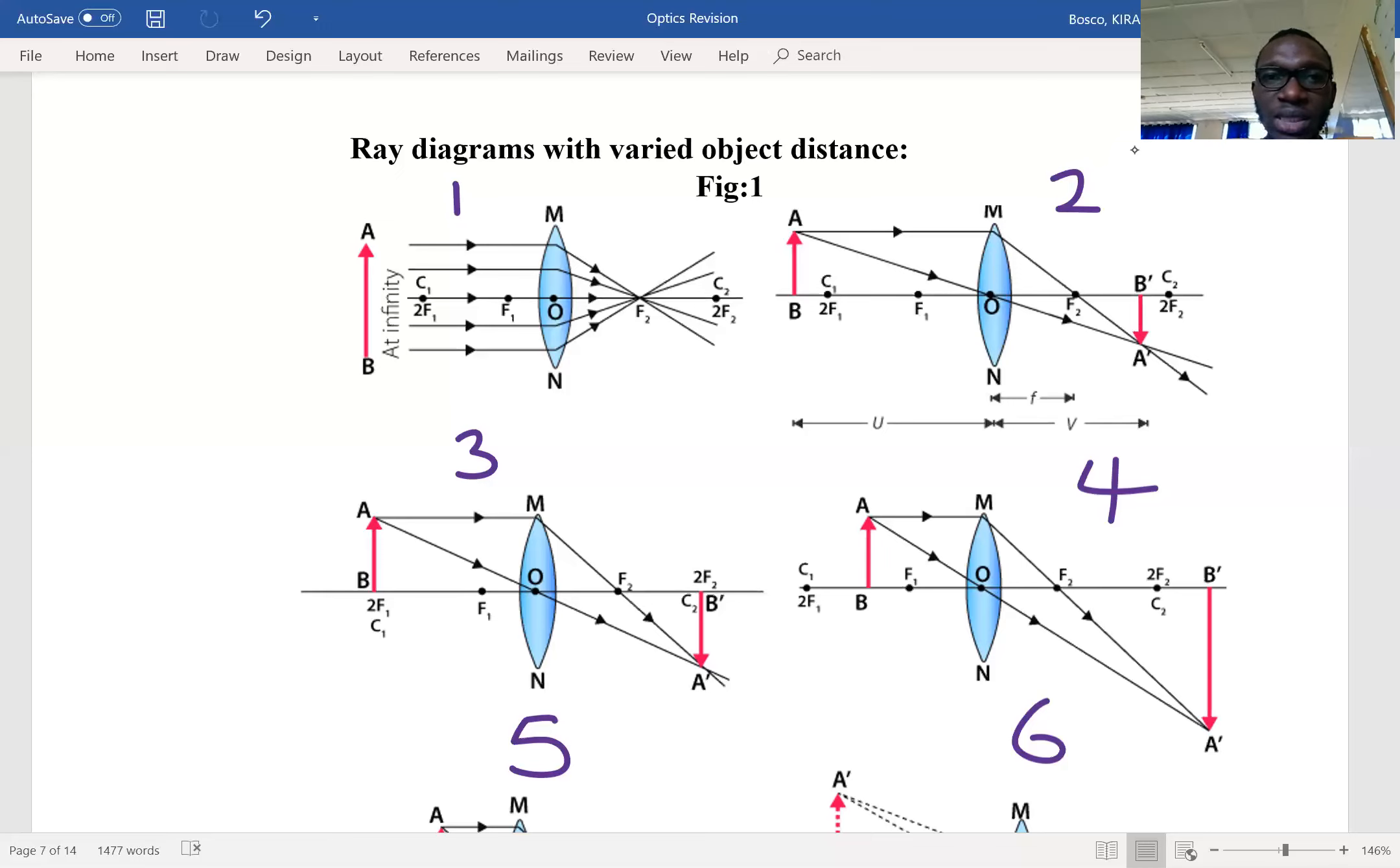In diagram one, all rays which are parallel converge at F. In the second diagram, we have an object. We draw a ray from the top, parallel to the principal axis. After refraction, it converges through focal point F.